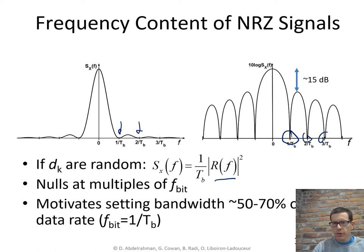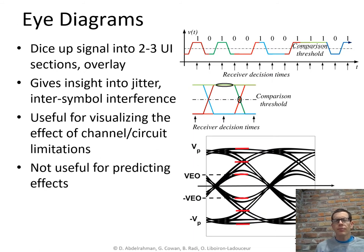Looking at this frequency response plot motivates us to set the bandwidth to be something like this we might have to have a system that passes most of this central lobe so we'll see in a lot of wireline design we're going to say okay we've got a wide enough bandwidth if the bandwidth of the system is 50 to 70 percent of the data rate.